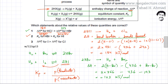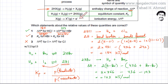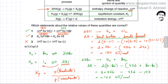Moving to the third option, which talks about ionization energy (delta HI), stating that delta HI for iodine is greater than delta HI for chlorine. This statement is incorrect. Iodine is a larger atom, so removing an electron from iodine is very easy — larger atoms have lower ionization energy because the electron is far from the nucleus. Chlorine is a smaller atom, so its electrons are held more strongly, requiring more energy to remove. Therefore this third statement is incorrect.